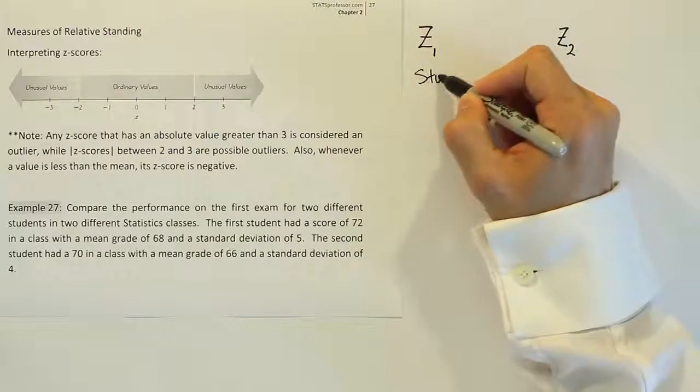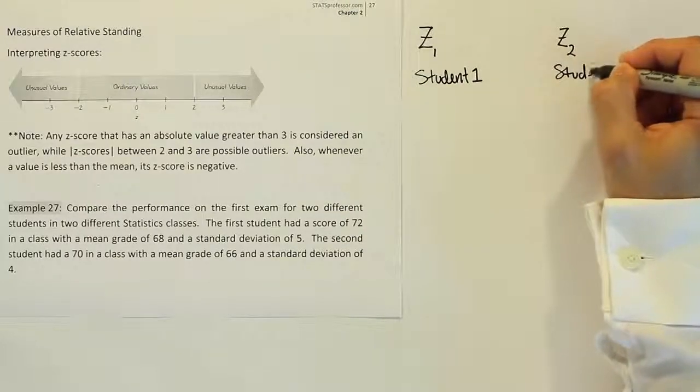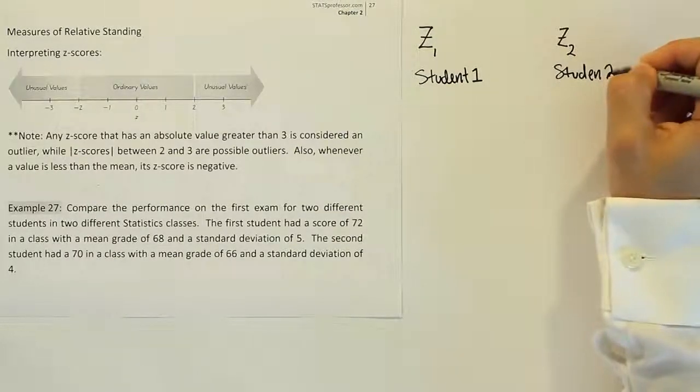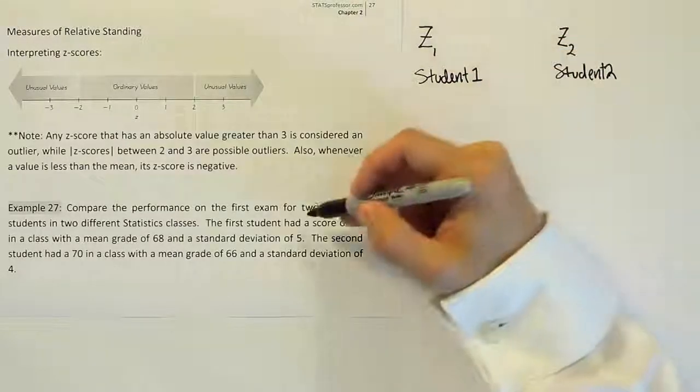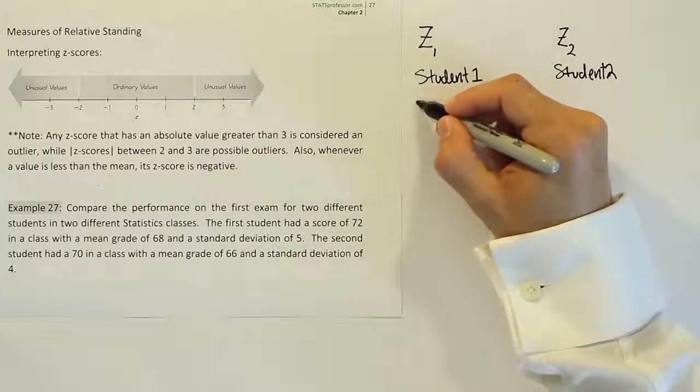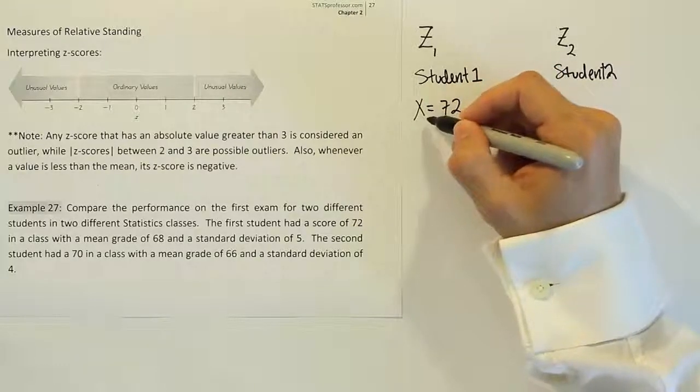So I'm going to label this student 1 and label this one student 2. Under student 1, it says the first student had a score of 72. Let's call his score x just for a generic variable to represent it.